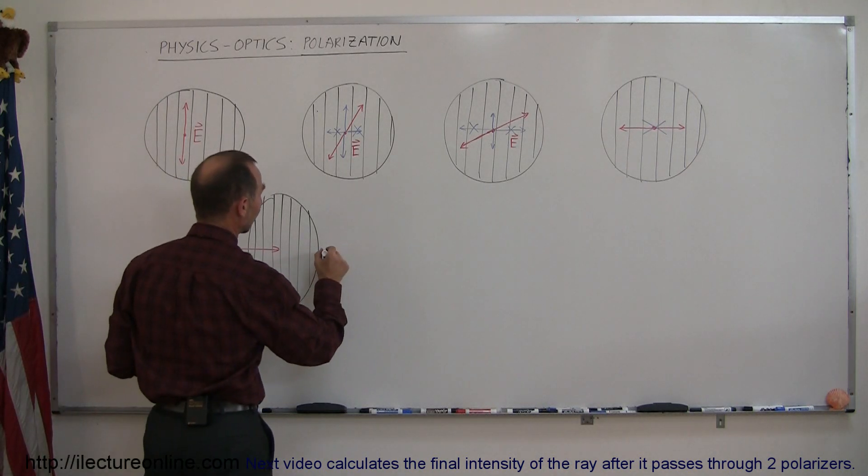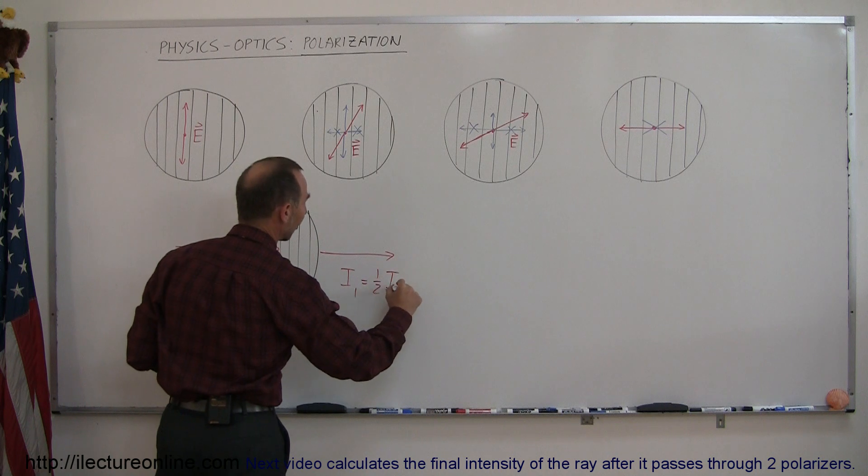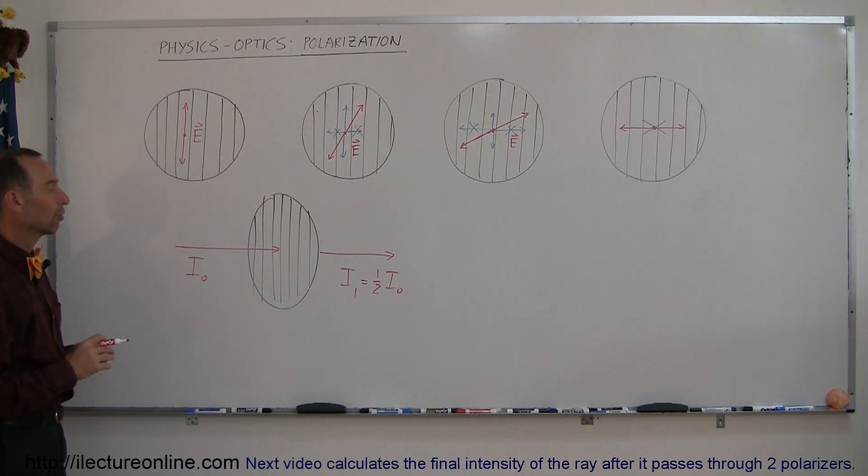then when it leaves the first polarizer and gets through on the other side, the intensity on the other side is only equal to half of the original intensity. And that's how polarizers work.